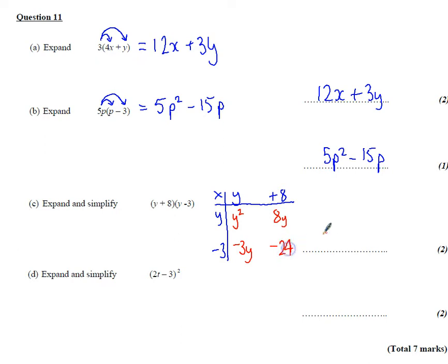When I come to put this back together, all I need to do is combine these two terms. So I get y squared, I get 8y minus 3y, which is positive 5y, then I get minus 24.